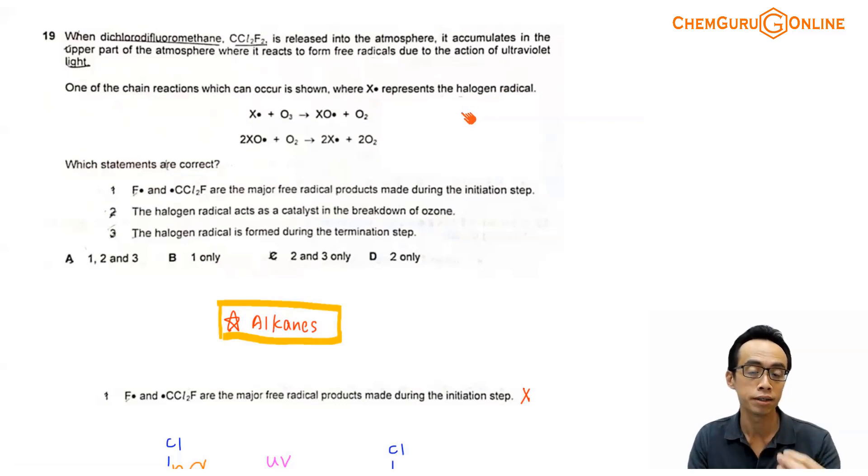So the dot is to emphasize that it has an odd number of electrons. So the first step is X dot plus ozone to give me XO dot and O2. Then 2XO dot plus O2 to give me 2X dot plus 2O2. So effectively what is happening is my X radical or my halogen radical is regenerated, correct?